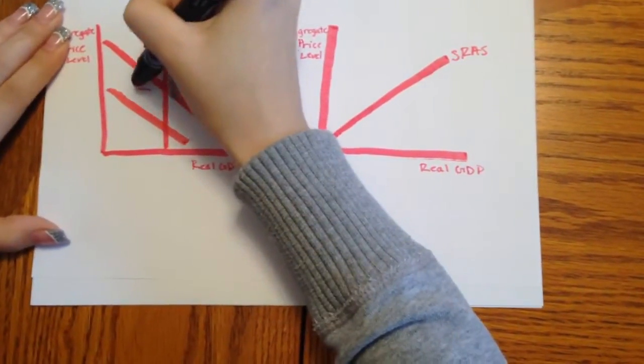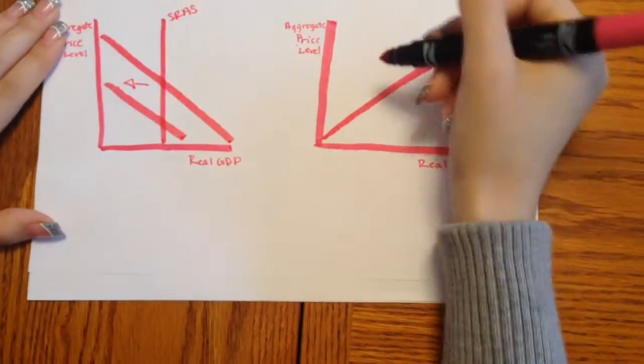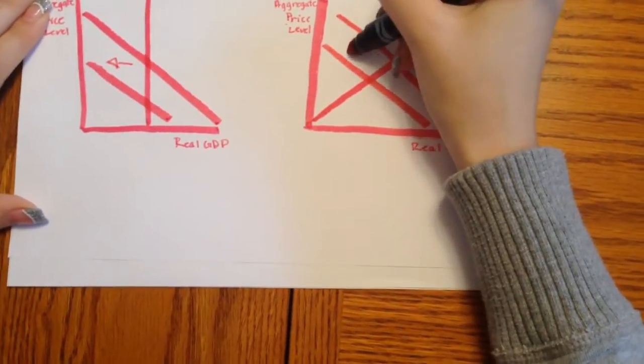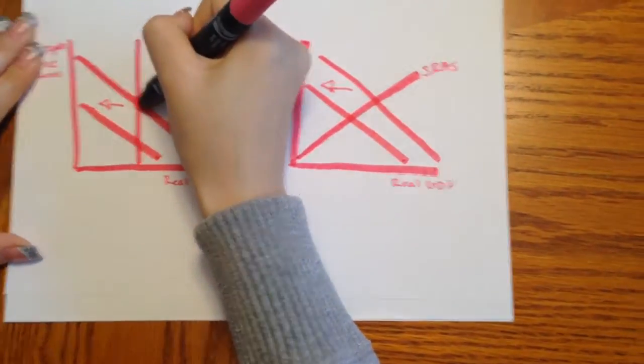Whereas in Keynes, if aggregate demand shifts to the left, output decreases. And if it shifts to the right, output increases.